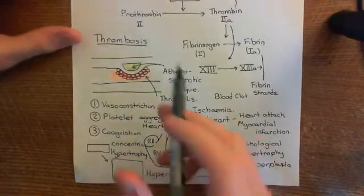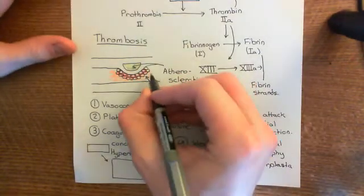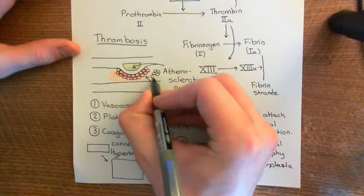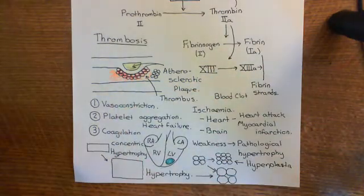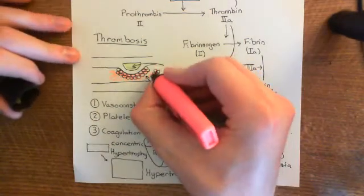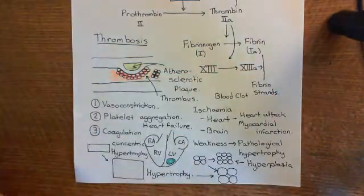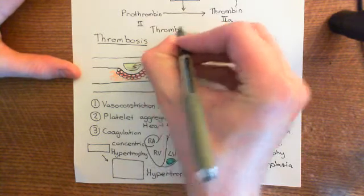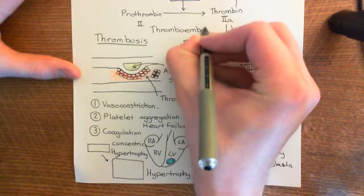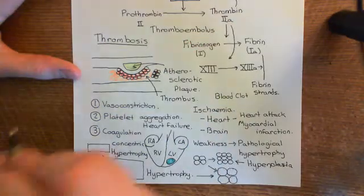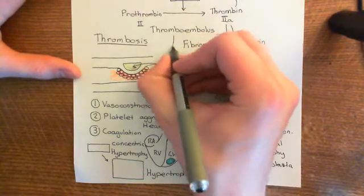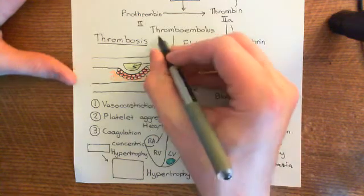In addition, you can also get portions of the thrombus breaking off and going off into the blood. Here is a little portion of a thrombus which has broken off from the main thrombus and is now whizzing off around the blood. This is what's known as a thromboembolus. An embolus is any large particle that is moving around in the vascular system. A thromboembolus is an embolus that is specifically made of a fragment of a thrombus.